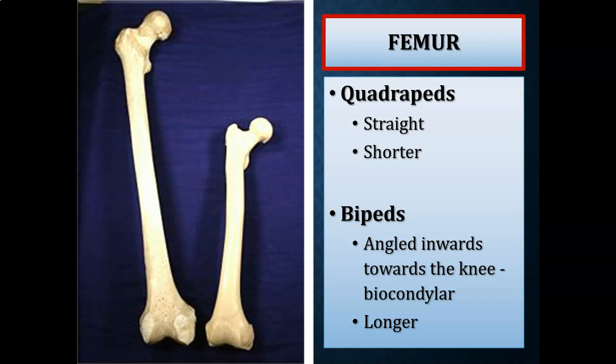The femur is another important feature we sometimes recover from fossil hominins. If the femur is longer and angled inward towards the knee, it indicates a biped; if shorter and straighter, it indicates a quadruped. An additional feature is the linea aspera — a ridge on the posterior of the femur — which is present in bipeds but not in quadrupeds.